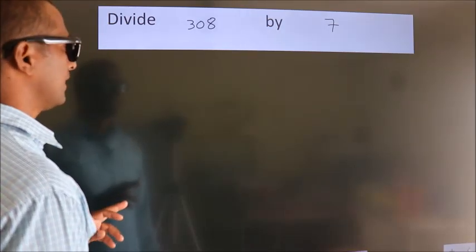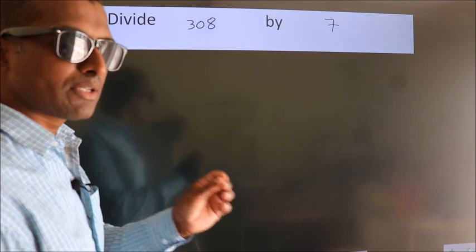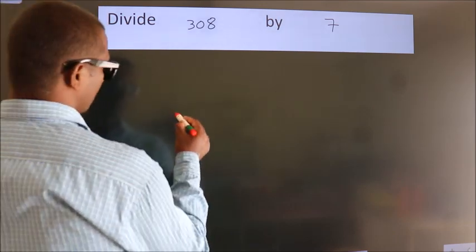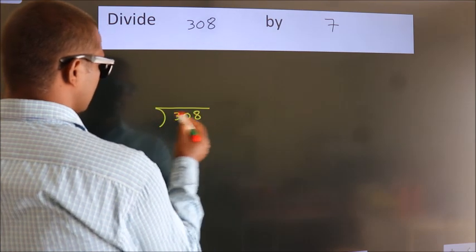Divide 308 by 7. To do this division, we should frame it in this way. 308 here, 7 here.